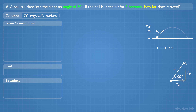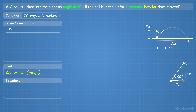The ball has some initial velocity, we know how long it's in the air, and we're trying to find how far it travels, which is the range of the projectile motion. We can call that delta x. We don't know the magnitude of the initial velocity, but we'll write down that the angle is 50 degrees, the time in the air is 3 seconds, and the initial x and y positions are 0 meters.